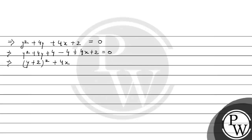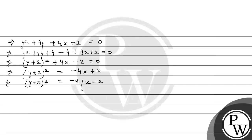We have minus 4x plus 2 equal to 0 on one side. So y plus 2 to the whole square equals minus 4 common, giving us x minus 2 by 4. Finally, this simplifies to the equation equal to minus 4 times x minus 1 by 2.